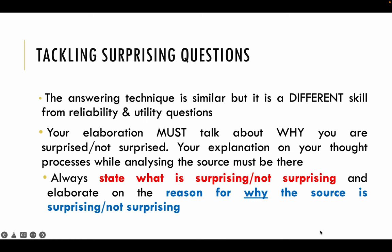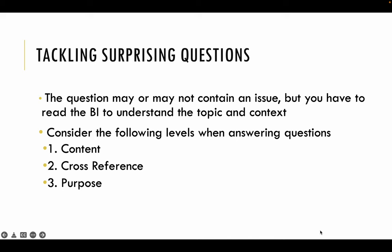Always state what is surprising and not surprising, and elaborate the reason on why the source is surprising or not surprising for you. Show the thought process. Always imagine that the examiner is a super blur person who doesn't know a single thing — make sure you really describe and elaborate your thought process. Don't expect the examiner to make the links for you. The question may or may not contain an issue, but you have to read the background information to understand the topic and context. The structure is very basic: content, cross-reference, purpose.